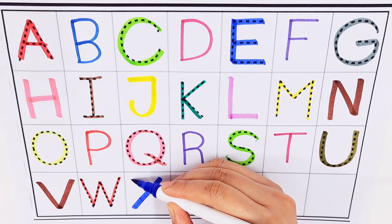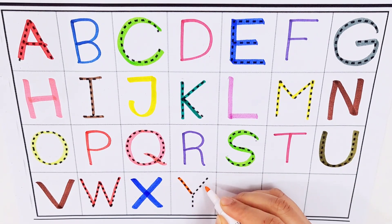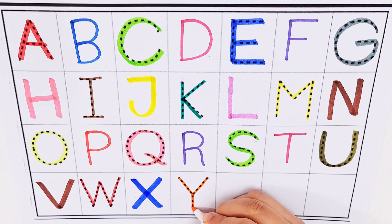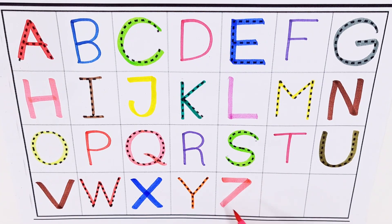X, X for X. Y, Y for yam. Z, Z for zero.